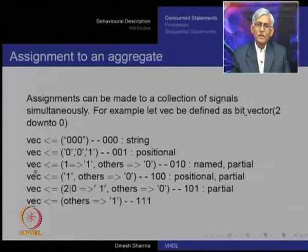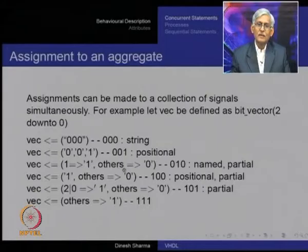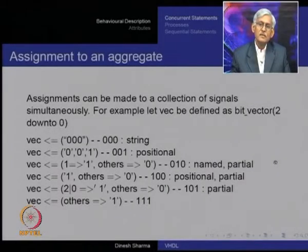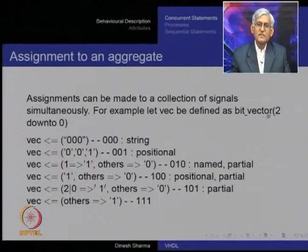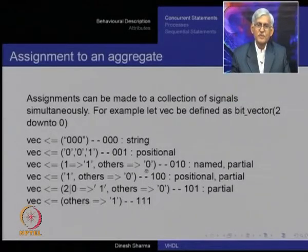That means to index 1 we give the value 1, and all other elements of this vector are given 0 — this is a named partial assignment. Similarly, we can have a positional partial assignment: assign to vec the value 1 and others 0. The association of this 1 is by position, so it is the first element of the vector, which because vec is defined as 2 down to 0, is actually vec(2). All the others are assigned 0.